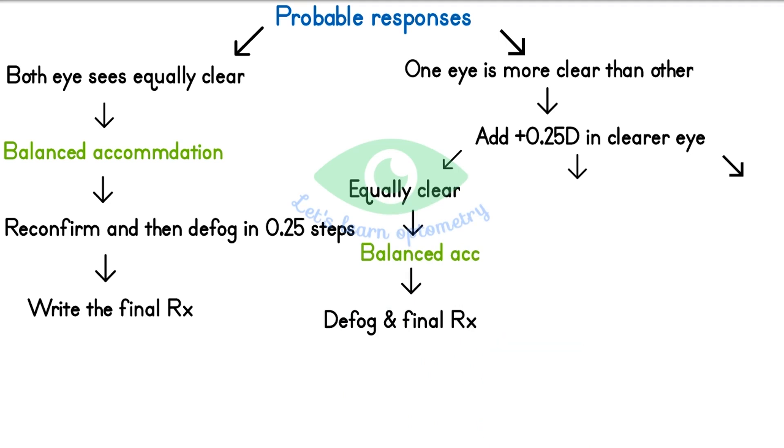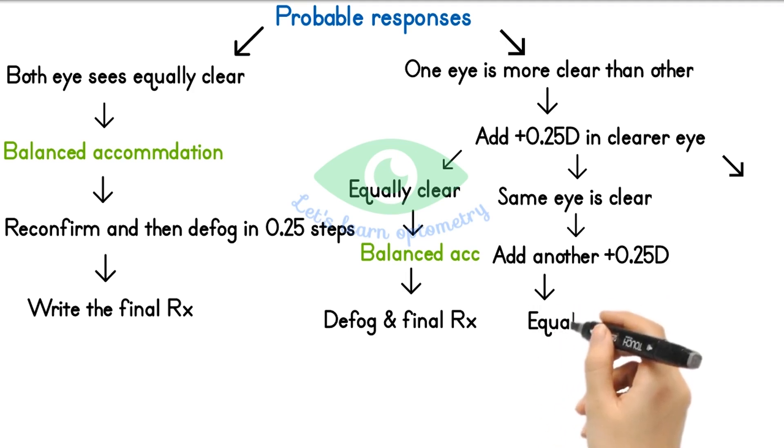Second response: even after adding 0.25 diopter lens, the same eye is clearer than the other. In this case, left eye is still clearer than the right eye. Now again add 0.25 diopter in front of left eye and ask for the response. If they say now both eyes are equally clear, we can defog and write the final prescription.